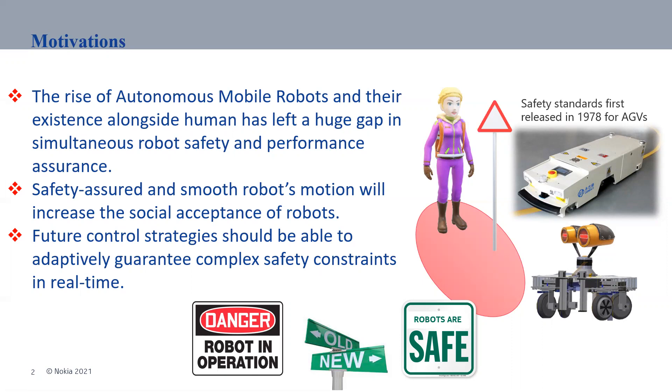Safety assured and smooth robot motion will increase the social acceptance of robots in the future, and future control strategies should be able to adapt to complex safety constraints in real time. The purpose of this work is introducing a control strategy that is able to apply this type of constraints, and we can possibly change the danger robot operation sign with robots are safe sign in future.